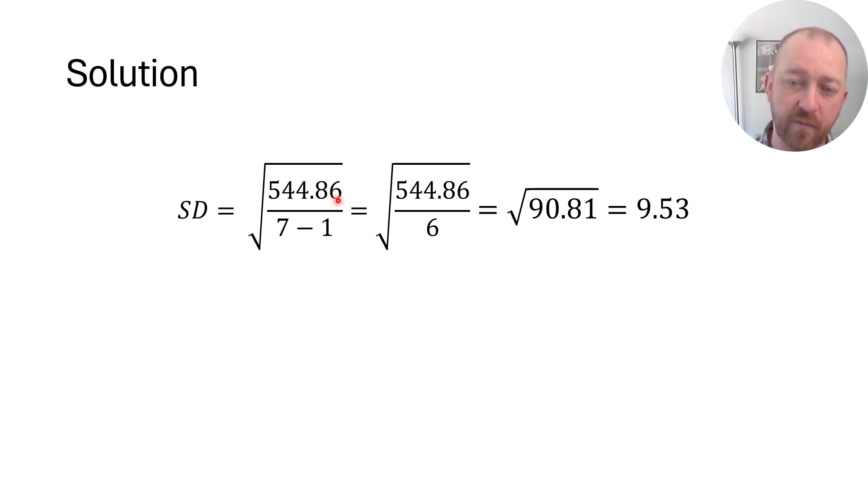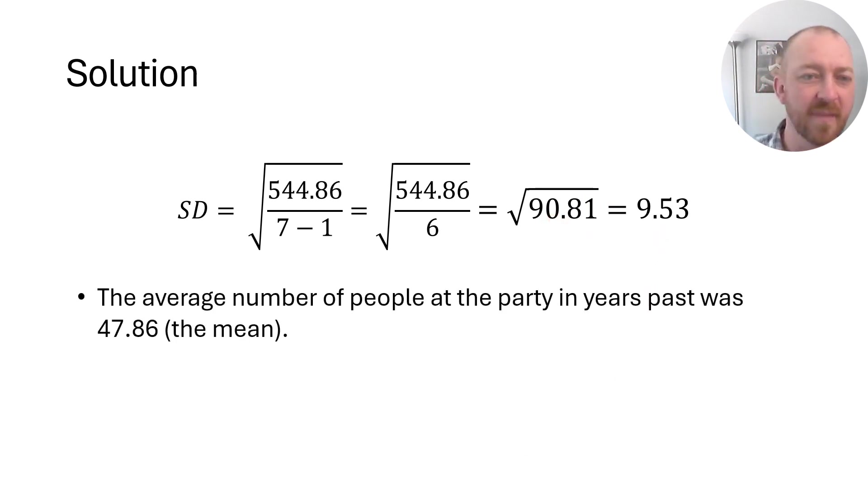And here's what we've got. 544.86 divided by 7 minus 1 is the same thing as 544.86 divided by 6. And of course, that equals 90.81. And it's very common here for students to kind of forget that square root operator. So remember to take the square root of this. This is not the standard deviation. The standard deviation is the square root of this, which is 9.53. So in other words, at this point, we know that the average number of people at the party in the years past was 47.86. We knew that because we had the mean. Now we know that the average difference from 47.86 over the last seven years was 9.53 people.